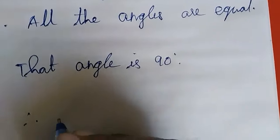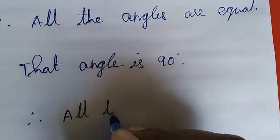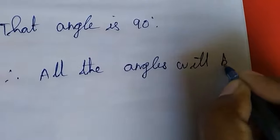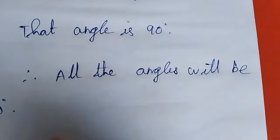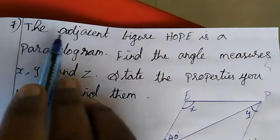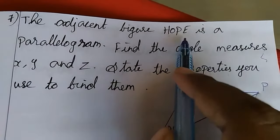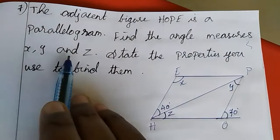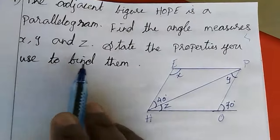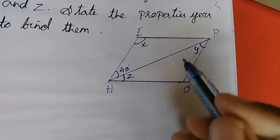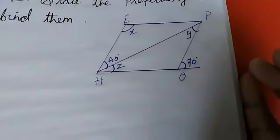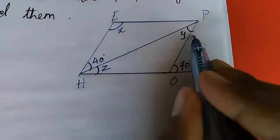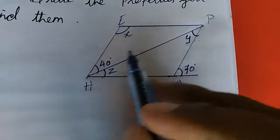Now we will move to the 7th problem. The adjacent figure HOPE is a parallelogram. Find the angle measures x, y, and z, and state the properties used. For y: 40 degrees and y are alternate angles. Alternate angles are equal, therefore y equals 40 degrees.